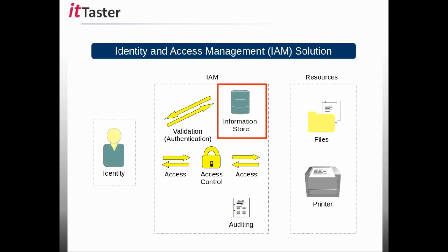An information store is typically a database that stores identities and details about those identities, such as descriptions and attributes, as well as secret information that can be used to verify identities, like passwords for example.